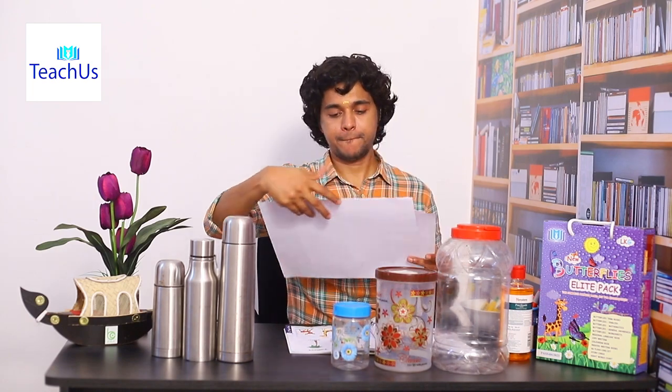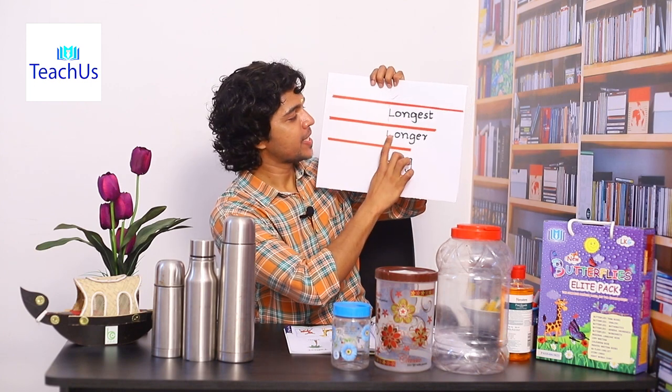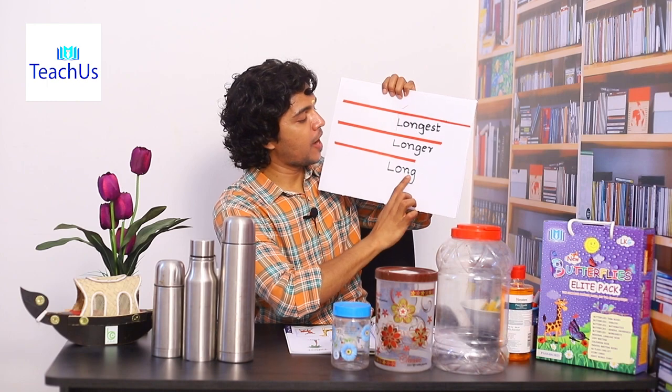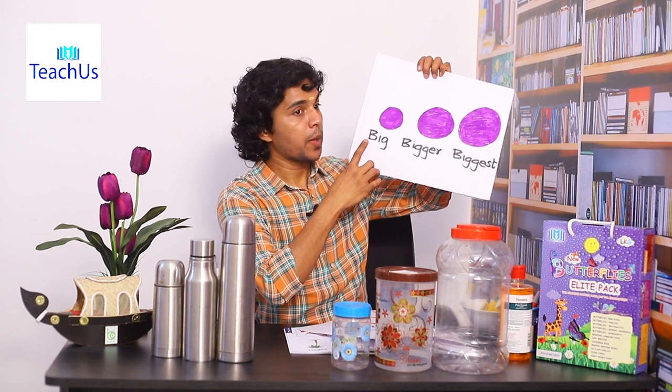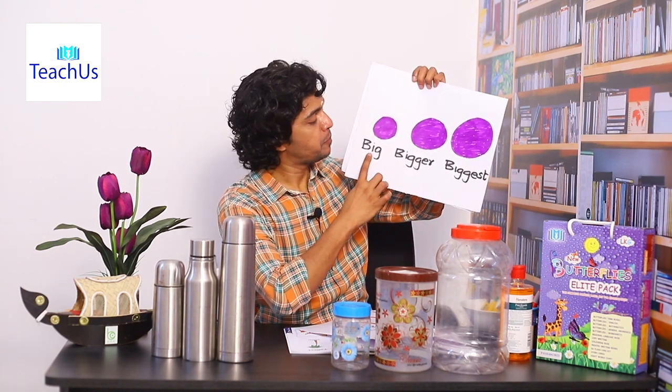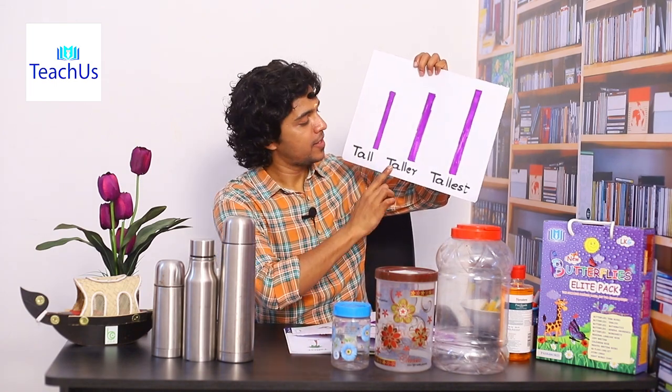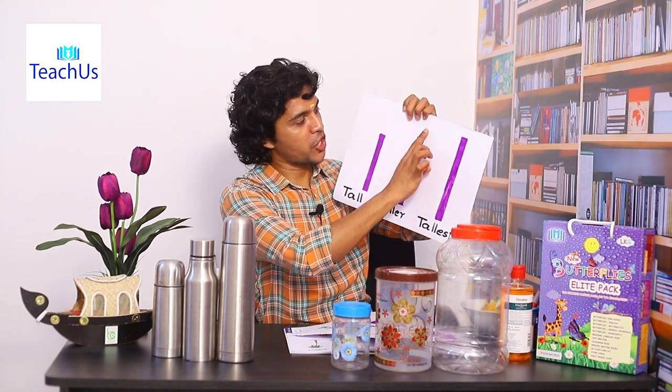Now I have three plastic containers in front of me. This container is a big container. When I take two, this is bigger than this one — this is a bigger container than this container. Now when I keep all three, this one is the biggest — the biggest among these three containers. So we have studied: long, longer, longest; big, bigger, biggest; tall, taller, tallest.